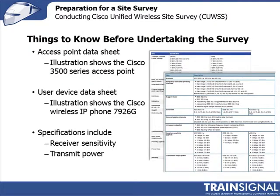Before going out to a site survey, I pull the technical specs off the access point and also the devices that the user expects to connect to those access points. On these specifications, look at the receiver sensitivity and the transmit power levels — you'll find that very valuable when you sit down and do your site survey and are trying to work out what the transmit power for your access point should be and what the different power levels are on your client.